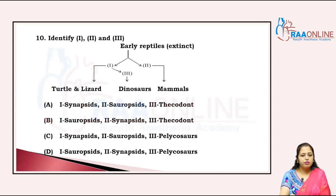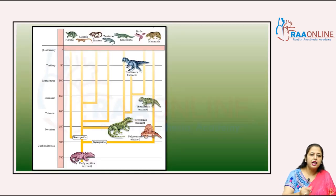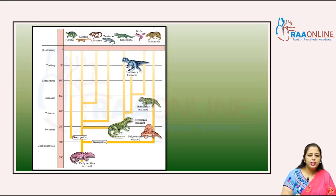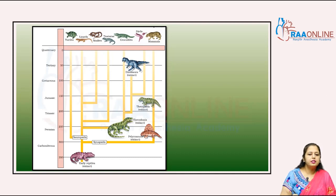That is early reptiles which are extinct. Looking at the evolutionary chart: turtle, lizard, then dinosaurs, then mammals. The geological periods shown are Carboniferous, Permian, Triassic, Jurassic, Cretaceous, Tertiary, and Quaternary. The sauropsids form the turtles, and the synapsids then give rise to further groups.